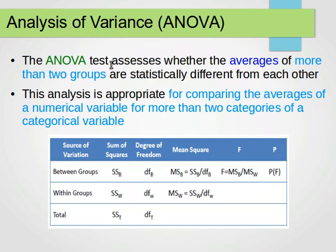The Analysis of Variance assesses whether the averages of more than two groups are statistically different from each other. This analysis is appropriate for comparing the averages of a numerical variable across more than two categories of a categorical variable. So we have one numerical variable and one categorical variable, and we need at least three groups or three categories in the categorical variable.